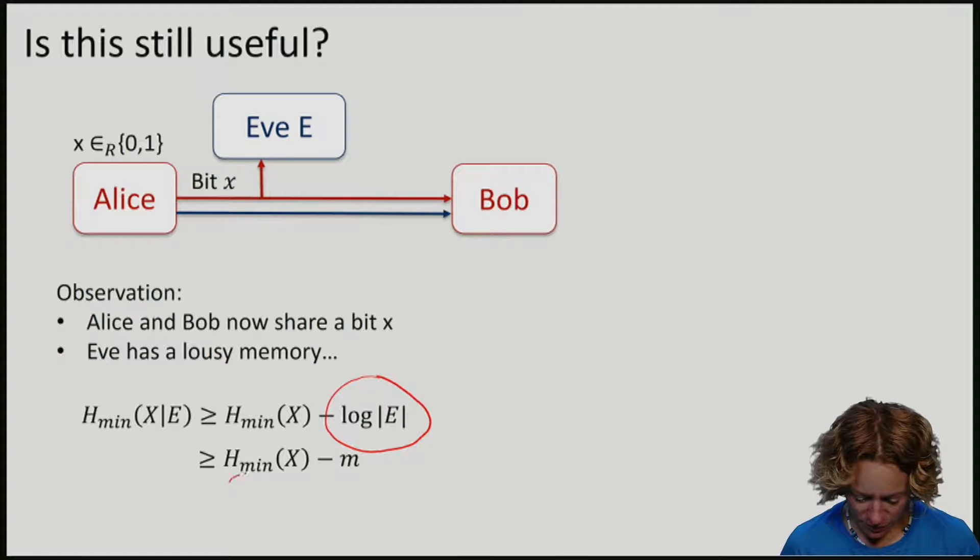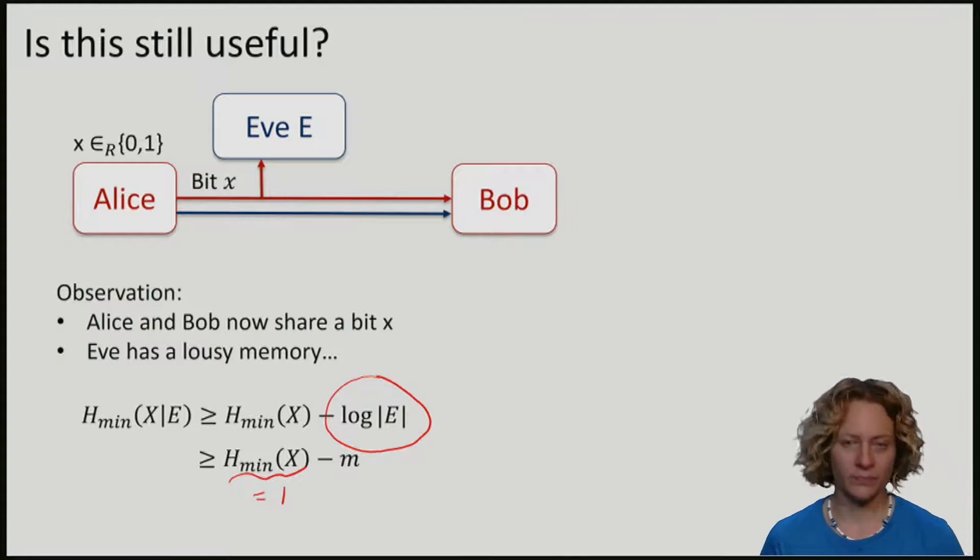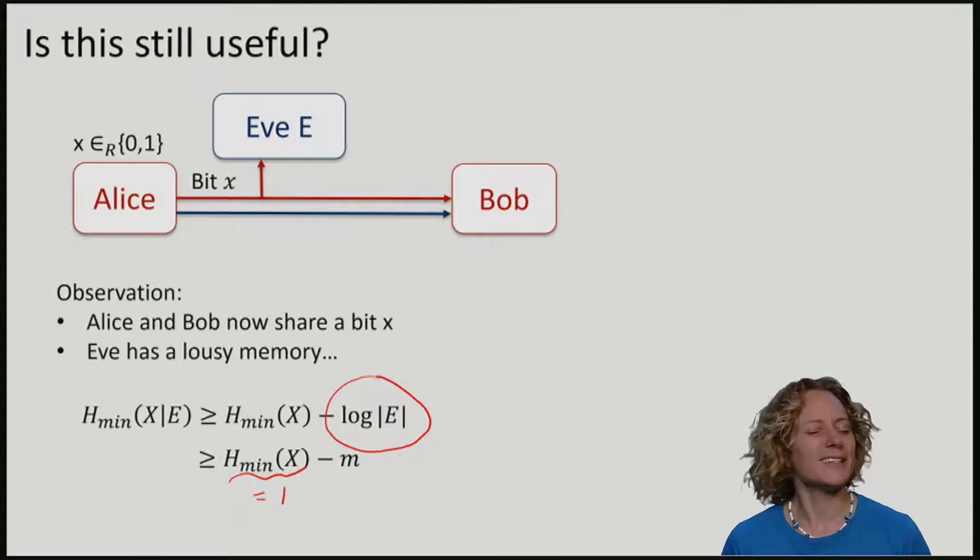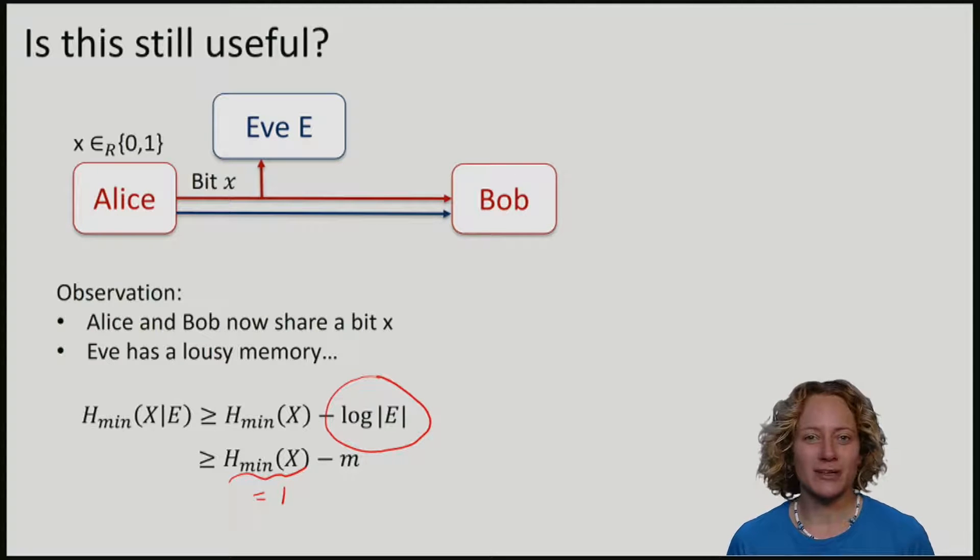So x is a random bit. So the min entropy of a random bit is just 1. So you can see that for one bit, we would only have some positive min entropy or some chance to produce key if m was 0. But let's now again have a look what happens if we do this many times.